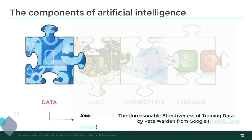We are here to discuss data. I encourage those of you interested in reading further to look at a paper called 'The Unreasonable Effectiveness of Data.' There was a talk at our company's conference a couple of months ago making the strong statement that you should spend more time curating your data than you spend on hyperparameter tuning for your models. I strongly encourage you to check the video on the Figure Eight website or read the paper — it's a very interesting topic.